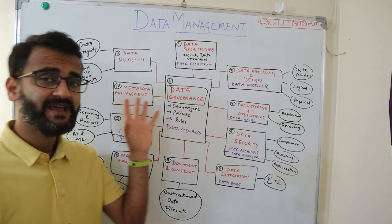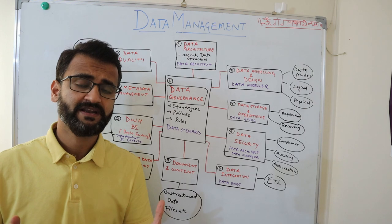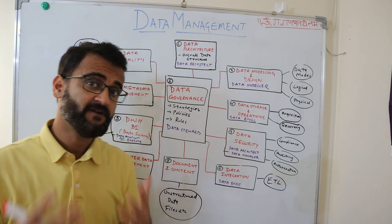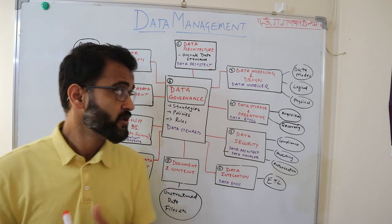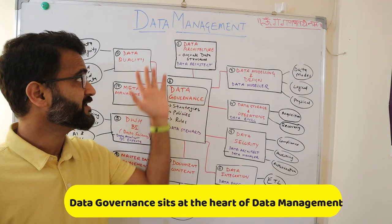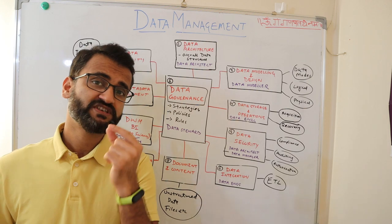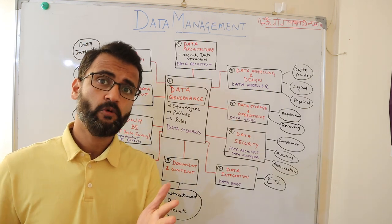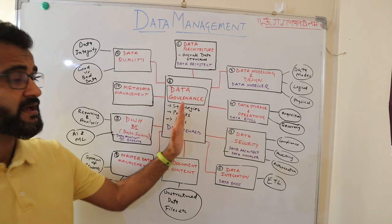At the center of any data management framework lies data governance. Data governance is not something very technical in itself, but it does what a government does for a country — it creates strategies, policies, rules, and a framework with which data would be managed, controlled, and maintained within an enterprise, company, or industry. Data governance sits at the center and connects with every other aspect of data management, so all the other 10 areas connect in some way with data governance. One specific role here is the data steward, whose responsibility is to define the policies and rules and regulations to lead the data governance processes.